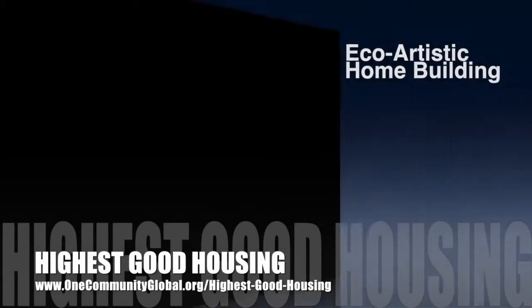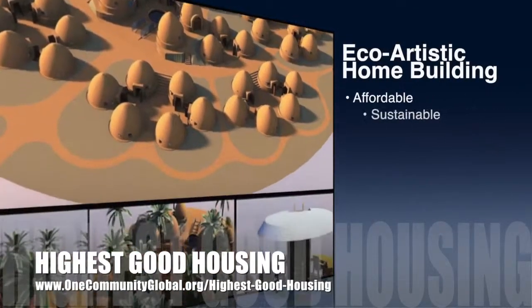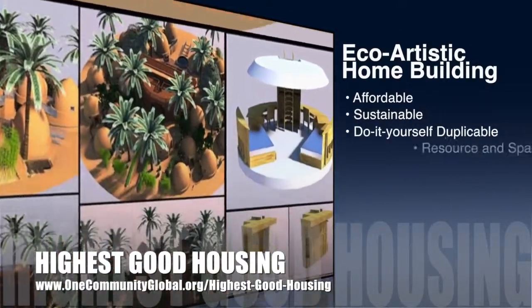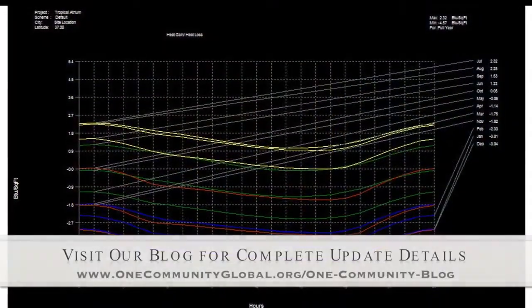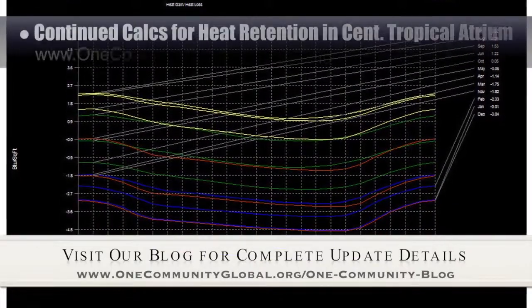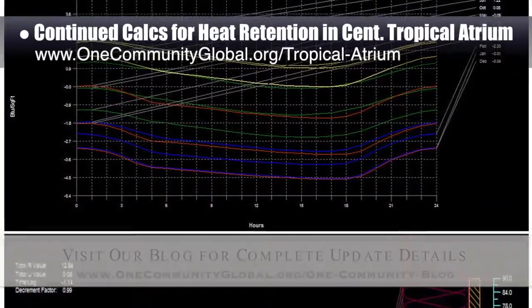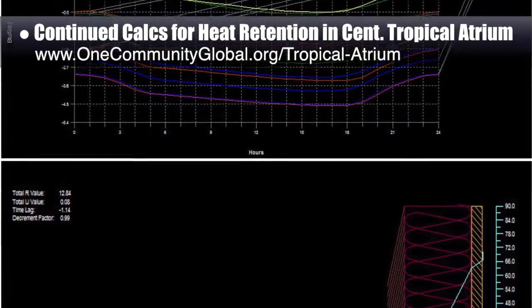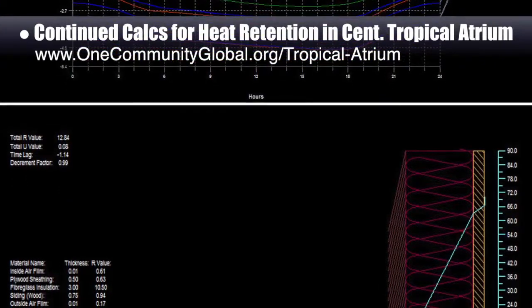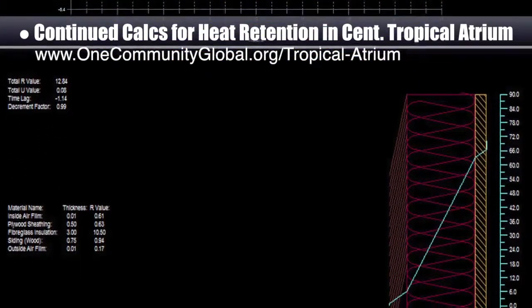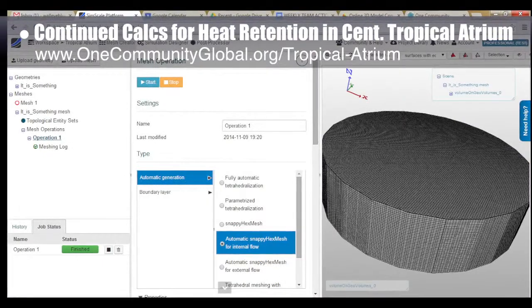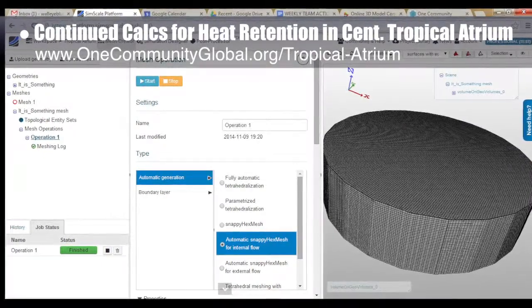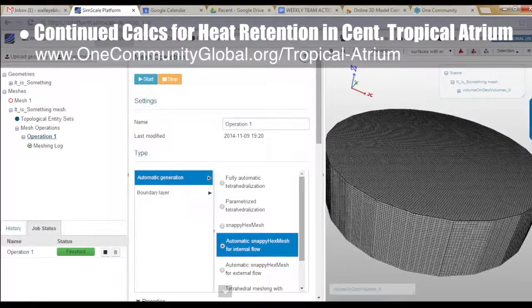OneCommunity's approach to highest good housing is eco-artistic home building that is affordable, sustainable, do-it-yourself duplicable, resource and space efficient, and consists of seven different sustainably constructed village models. This week, the core team working on highest good housing continued calculations for heat retention in the Central Tropical Atrium Recreation Space. This space will house the EarthBag Village water storage and recycle the village used shower water heat. The first two images here show heat transfer through the walls at different temperatures and different projected times of the year. The last image shows us working with new software, which we hope will allow us to calculate the total thermal mass and manipulate all the variables of the entire center of the structure.